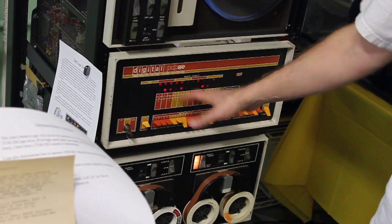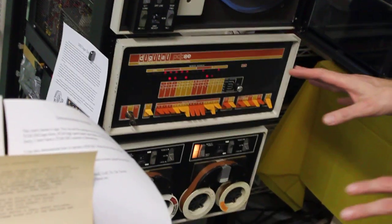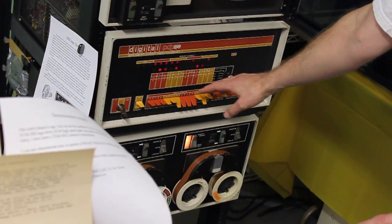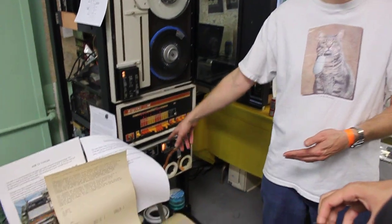So initially, booting machines didn't have the operating system. They'd then have to manually enter, using the switches, the bootstrap. Yeah, they wheeled it out and they got it with the back tape.